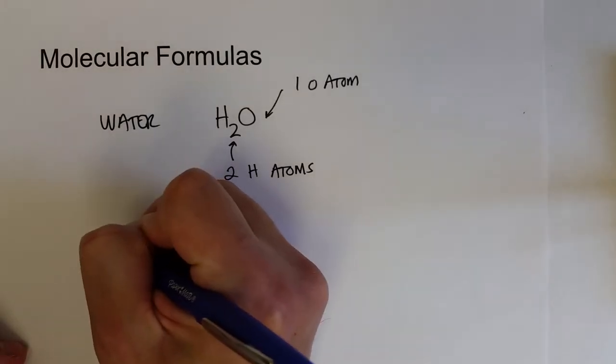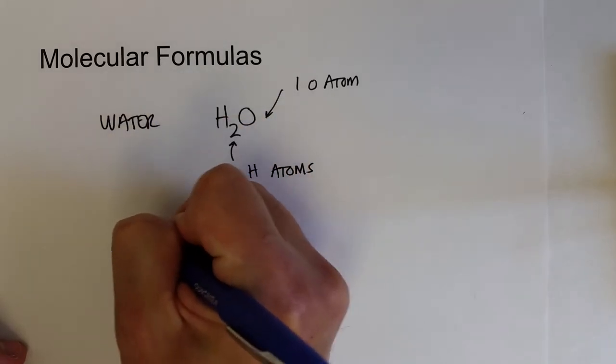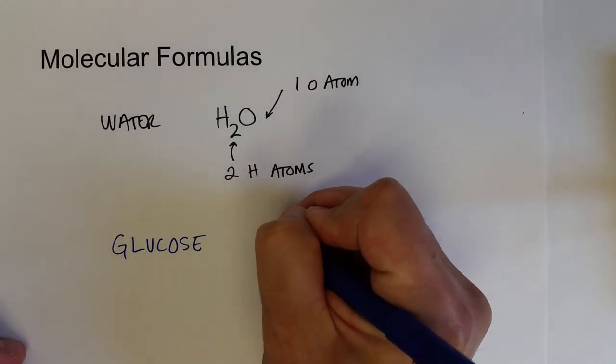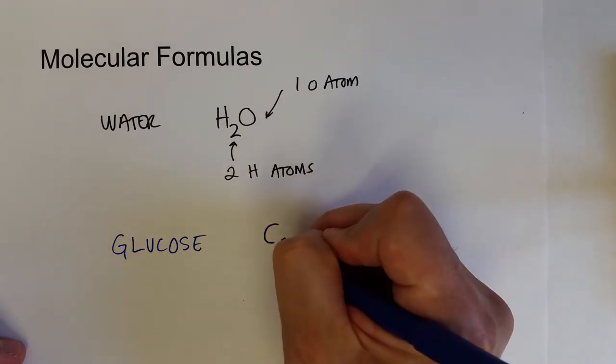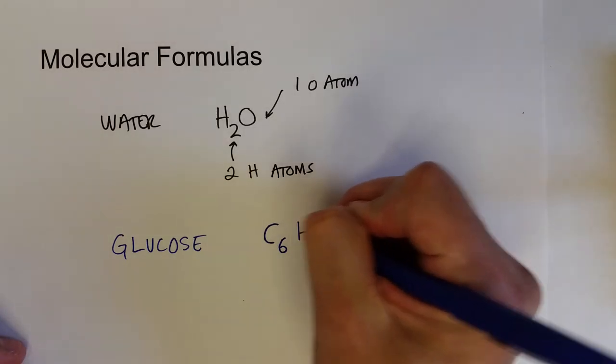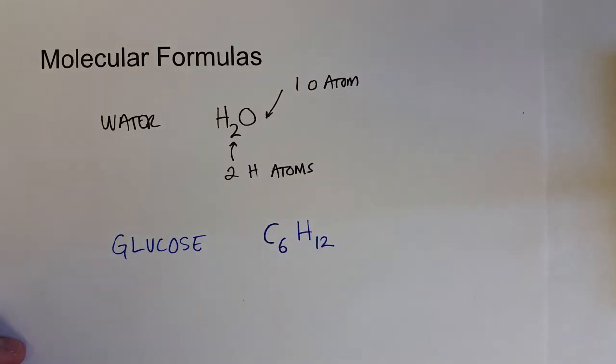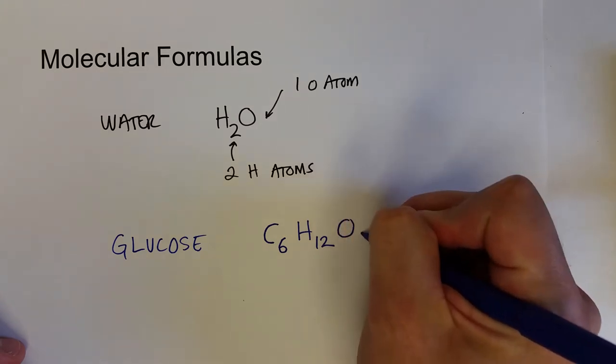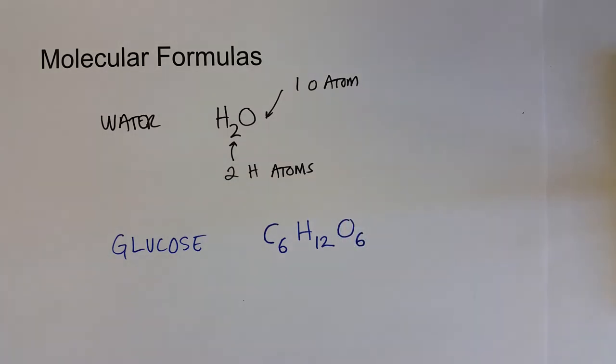And that shows you how many different atoms are there. If we wanted to show the molecular formula for the sugar molecule glucose, it turns out each glucose molecule has six carbons. And so we would write C, and then a subscript six, has 12 hydrogen atoms, and then six additional oxygen atoms. So the molecular formula for glucose is C6H12O6. And so that's how we would write it in terms of a formula.